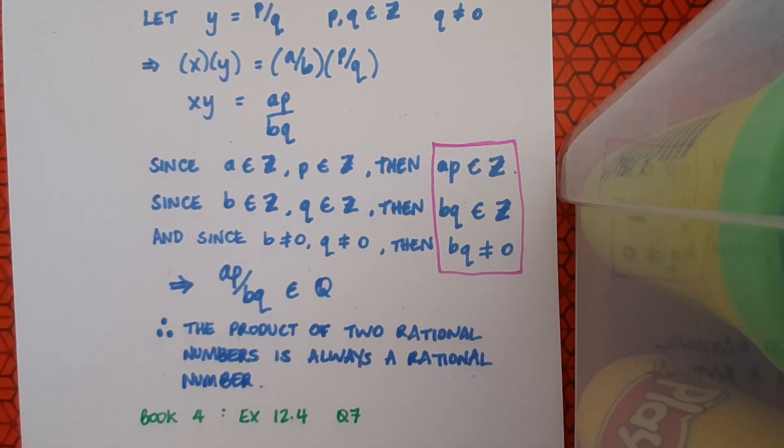And I'd suggest that once you've worked your way through this a couple of times, that you go to book 4, exercise 12.4, and try question 7, which is a similar type of question, again talking about rational numbers.